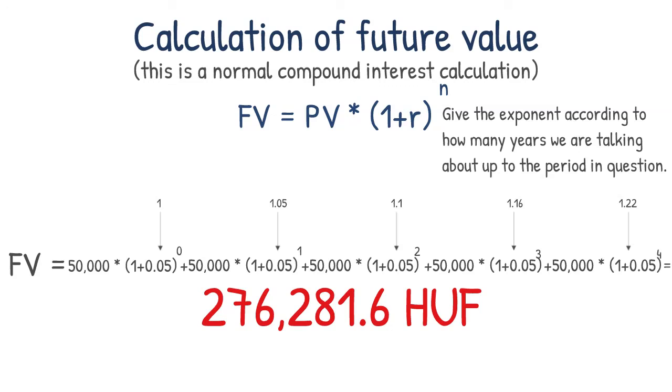As a result, the 5 times 50,000 forends that you can get at the bank correspond to 276,281 forends. In other words, it turned out that the 260,000 offer is more numerically, but you still don't do better with it.